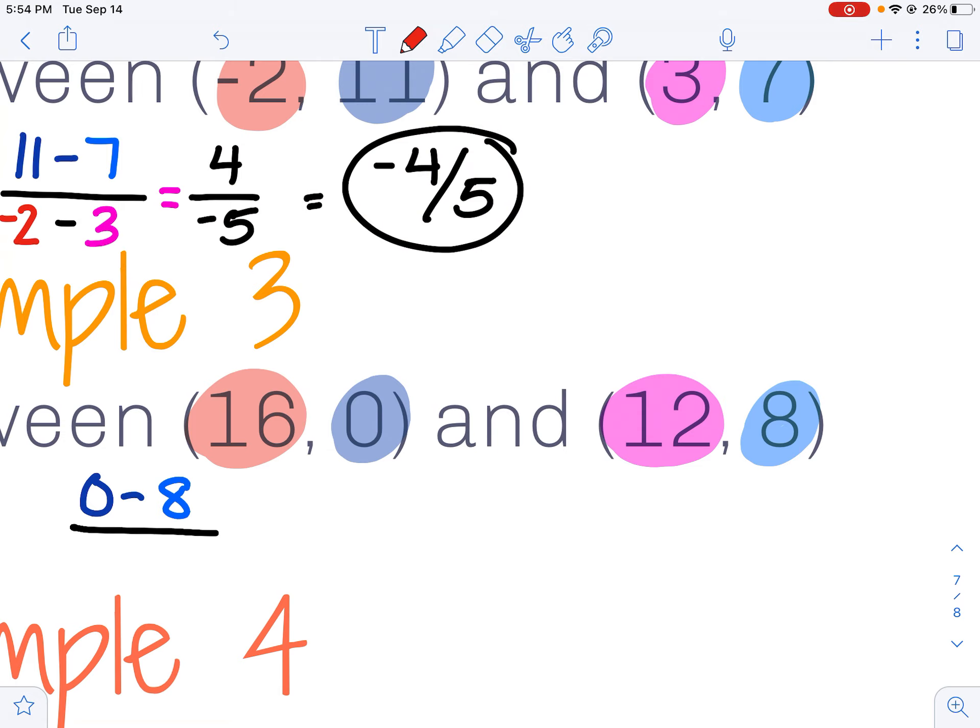Take my first x value, 16, subtract off my second x value, 12. And now I'm just doing some math. 0 minus 8 is negative 8. 16 minus 12 is 4. I can reduce that fraction and get negative 2.